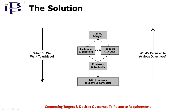The solution lies in the ability to quickly answer two questions: what do we want to achieve, and what's required to achieve objectives. The framework on the screen provides the means to do this by connecting targets and desired outcomes to resource requirements. Let's first apply this framework to the business-as-usual part of the process — that being to deliver existing products and services to existing customers and markets.